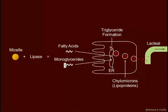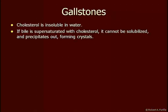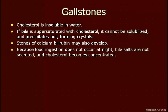Gallstones can occur because cholesterol is insoluble in water. If the bile becomes supersaturated with cholesterol, the cholesterol will begin to crystallize and precipitate out, forming crystals. Stones of calcium bilirubin may also develop. This occurs primarily at night when ingestion is not occurring — the bile salts are being desiccated, we're losing a lot of water, concentrating the bile, and the cholesterol is becoming concentrated. This is the period in which people who are prone to gallstones will begin to see development of these stones.